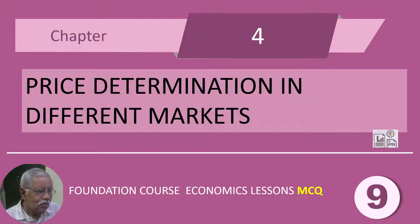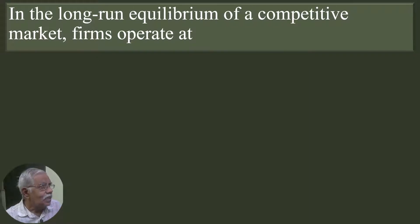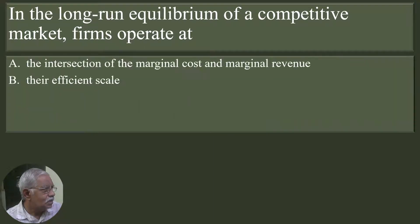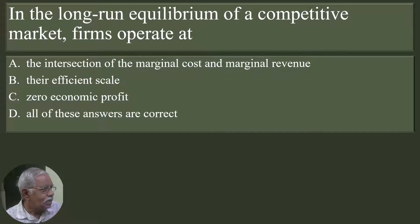Okay, we shall go inside the session. The questions. In the long run equilibrium of a competitive market, firms operate at the intersection of the marginal cost and marginal revenue, their efficient scale, zero economic profit. All of these answers are correct.